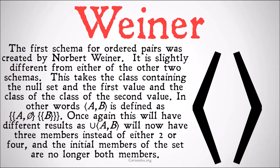The first schema for ordered pairs was devised by Norbert Wiener. It is slightly different from either of the other two schemas. This takes the class containing the null set and the first value, and the class of the class of the second value. In other words, a, b is defined as the class of the class of a and the null set, and the class of the class of b. This will have different results, as the union of a, b will now have three members instead of either two or four. Also, the initial members of the set are no longer both members, because while a is a member, b is not — rather the class of b is a member, because we had those two sets of curly brackets on b, so when we do our union we only eliminate one of those sets of curly brackets.